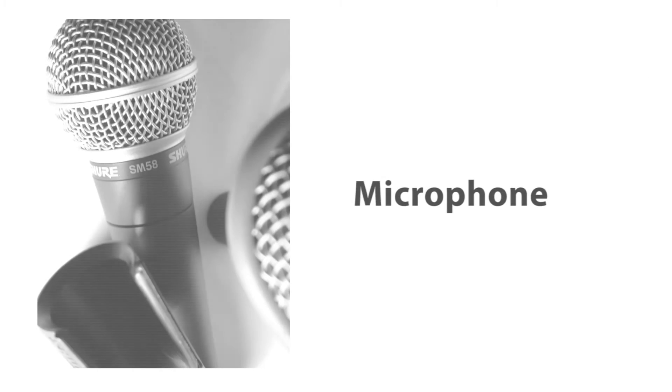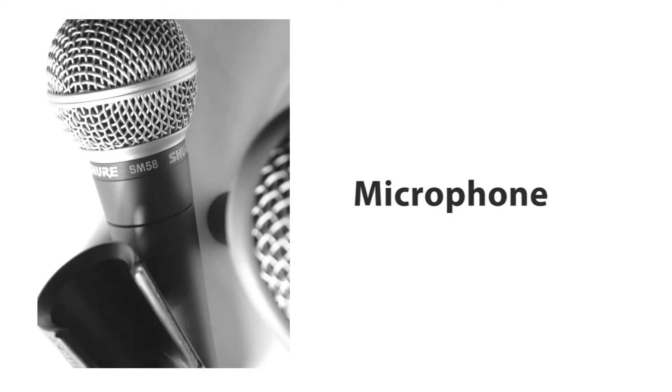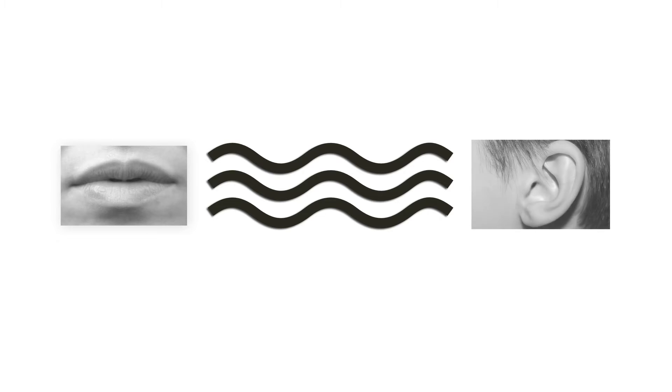We'll talk about microphones in a minute, but first let's talk about sound waves. Sound waves are the way that you and I hear, and they're caused by vibrations — whether vocal cords or violin strings — and they're transmitted through the air to our ears, moving the eardrum back and forth, creating an electrical impulse which tells our brain what we've just heard.